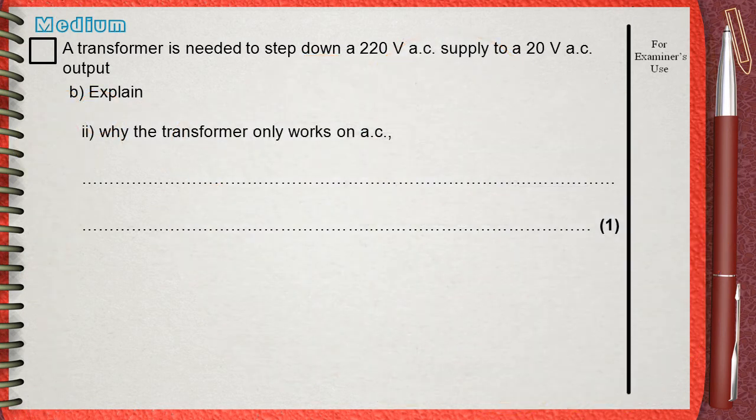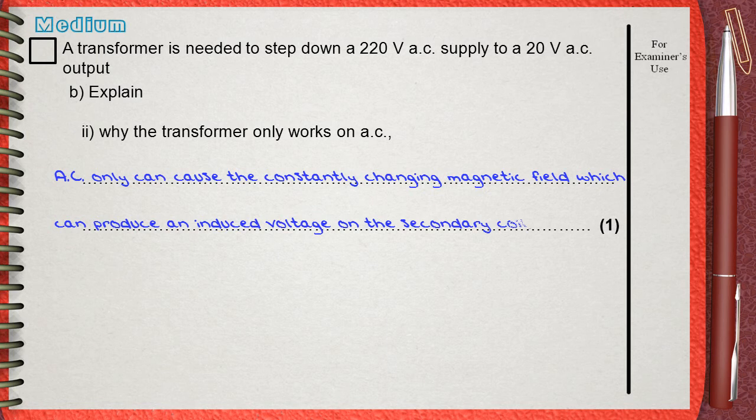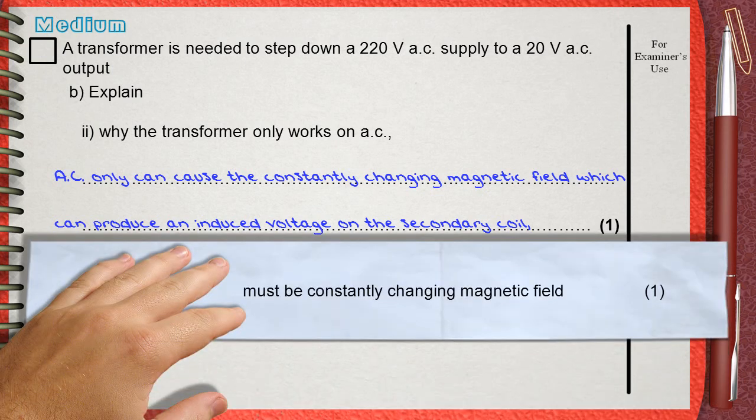So our answer simply can be AC only can cause the constantly changing magnetic field, which can produce an induced voltage on the secondary coil. And this is exactly what the mark scheme needs.